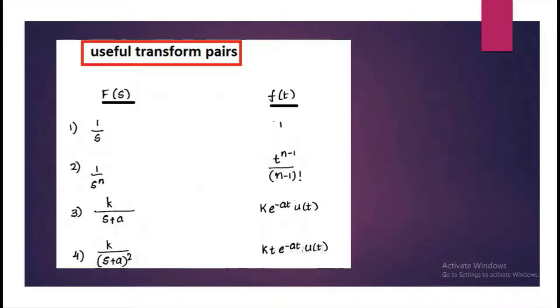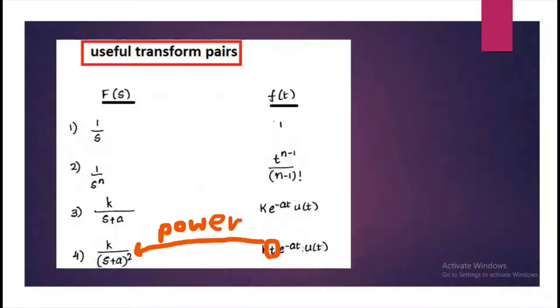Similarly, if you have K by S plus A the whole squared, then it will become the same as the previous one, multiplied by T because you have this power, or 1 by S squared term.